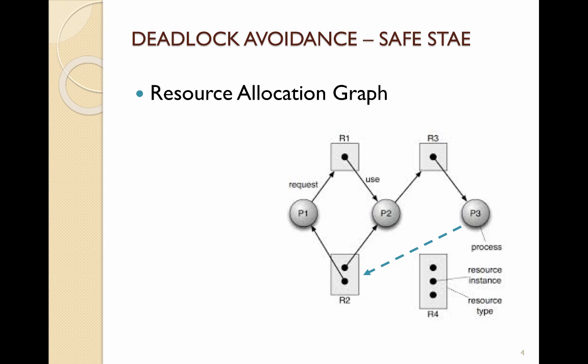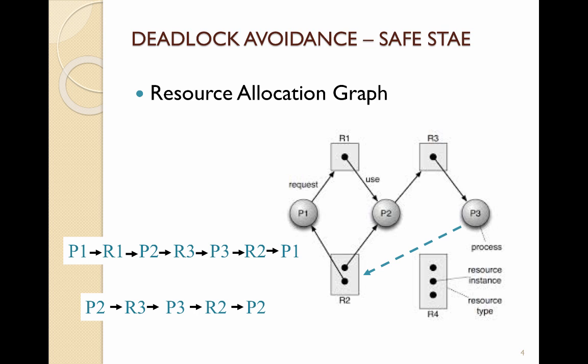If P3 were to make a request for resource 2, we would have a problem because cycles appear in the graph. When there is a cycle, there is a chance of deadlock — if P3 requests resource 2, there is no way for P3 to free up resource 3 for P2, creating a deadlock. There are two cycles: one starting and ending at P1, and one starting and ending at P2. When there is a cycle, the system is not in a safe state.